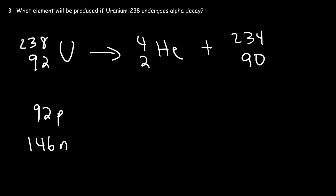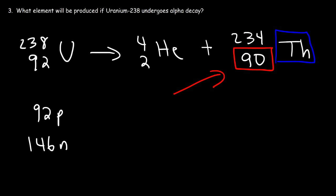So what element has an atomic number of 90? The atomic number identifies the element, not the mass number. Looking at the periodic table, if you go two spaces back from uranium, you get thorium. That is the element produced when uranium undergoes alpha decay, assuming one alpha particle is emitted per uranium nucleus.